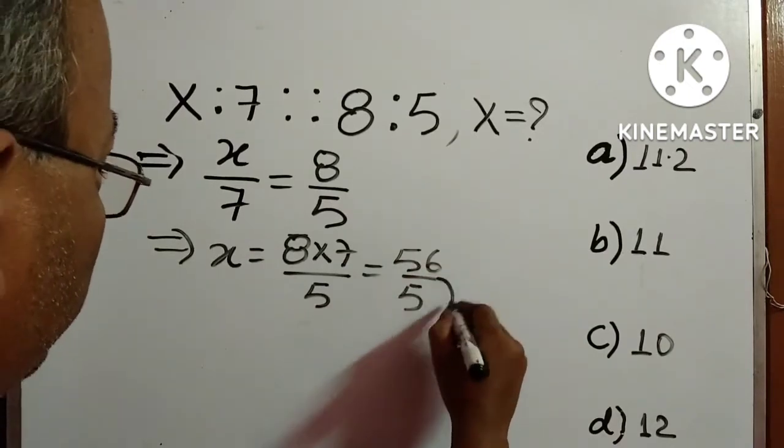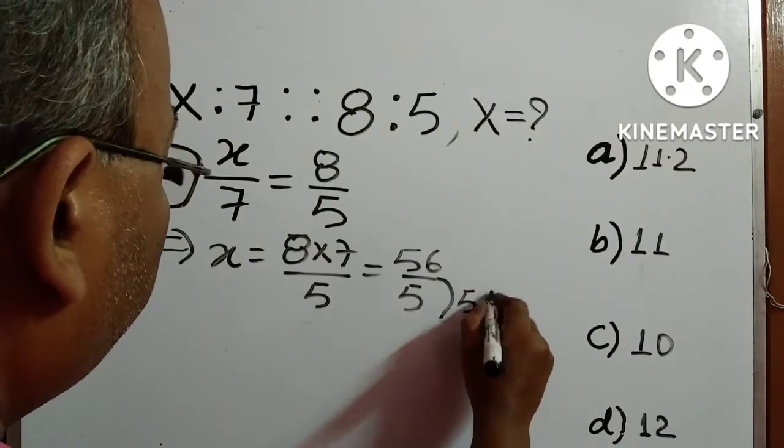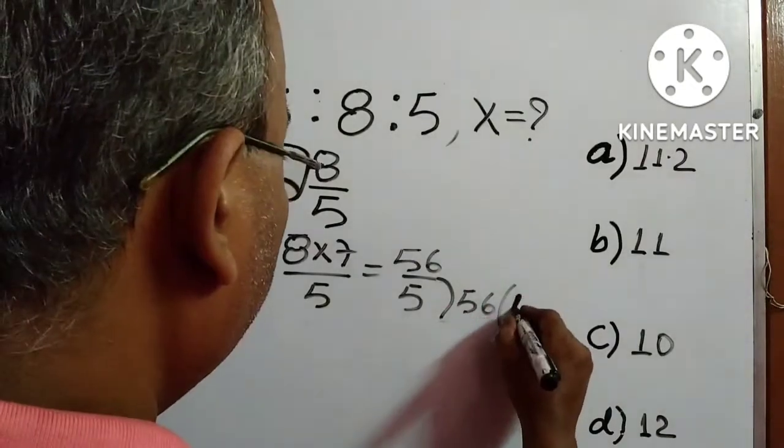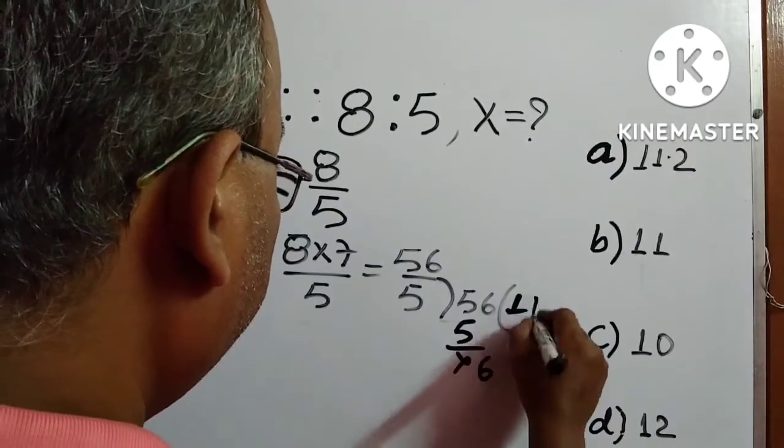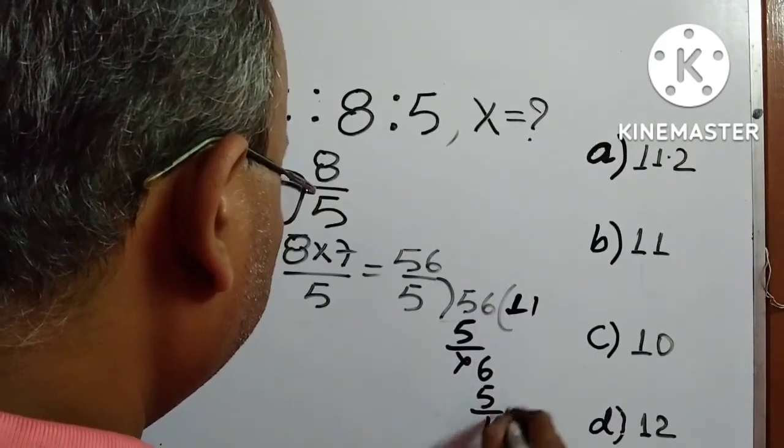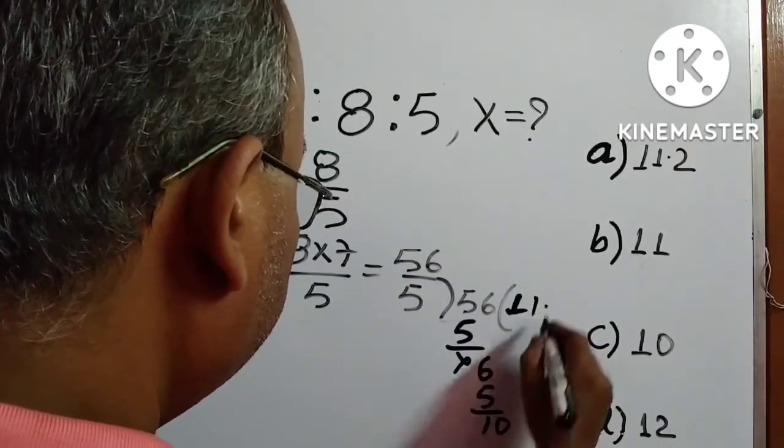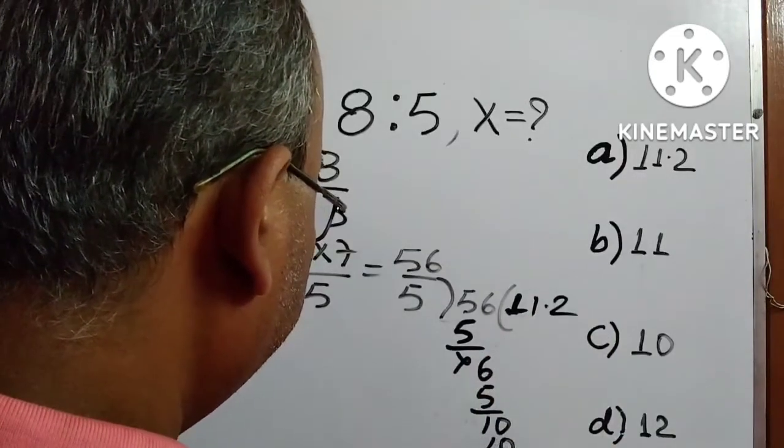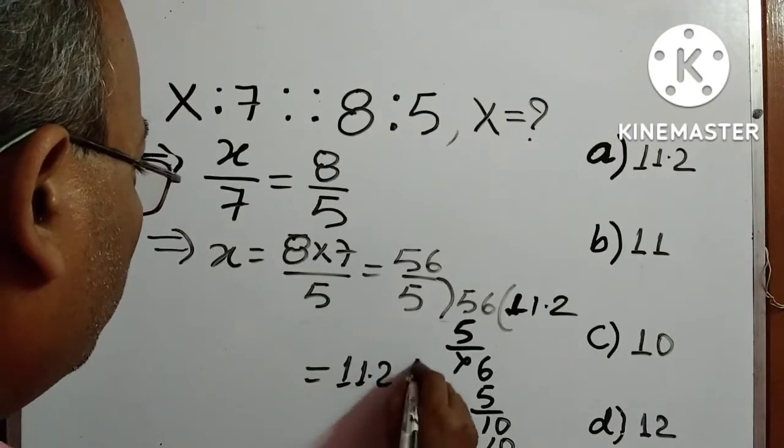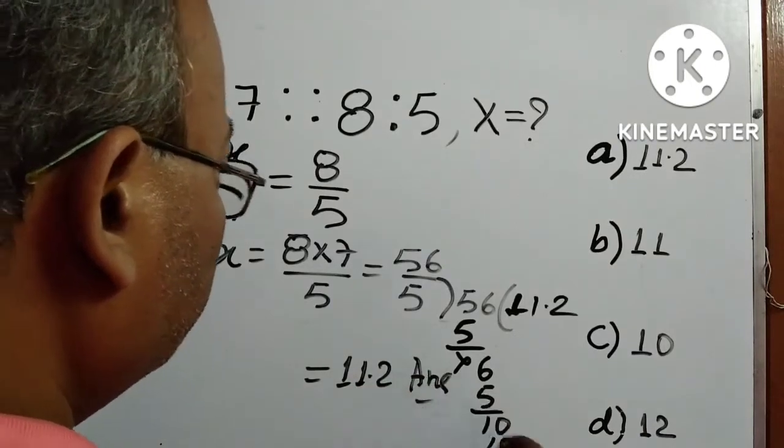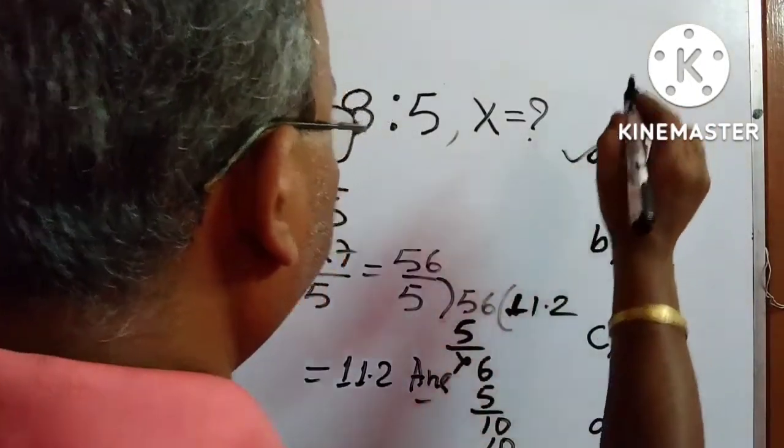Now you divide this: 5 goes into 5 once, and into 6 once, then 5 goes into 10 twice. So 11.2 is the answer. Answer is option A.